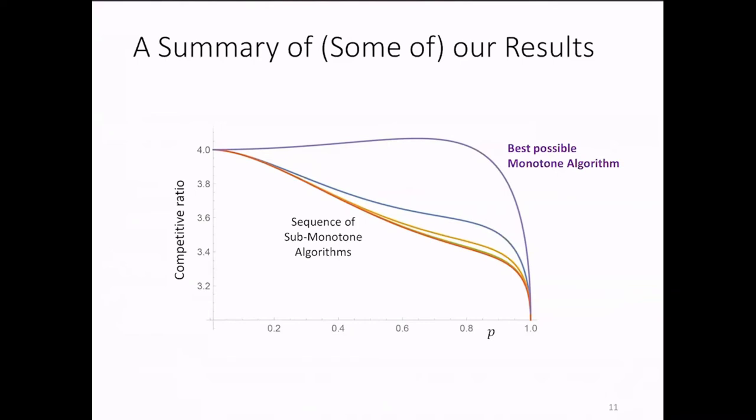And then you see the improved performances of four more non-monotone algorithms with colors blue, yellow, green, and orange, showing that the monotone algorithm above is not optimal. And something interesting to observe is that the derived competitive ratios for the sub-monotone algorithms always fall between three and four.